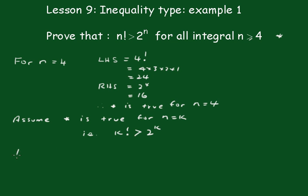Now prove the statement is true for n equals k plus 1. That is, k plus 1 factorial is greater than 2 to the k plus 1.